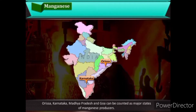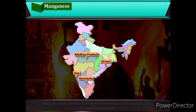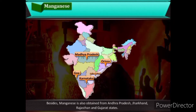Orissa, Karnataka, Madhya Pradesh, and Goa are major manganese-producing states. Manganese is also obtained from Andhra Pradesh, Jharkhand, Rajasthan, and Gujarat.